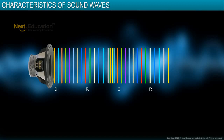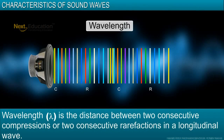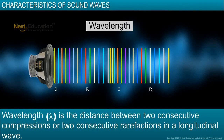The length of a single wave is called its wavelength. In other words, wavelength is the distance between two consecutive compressions or two consecutive rarefactions. It is denoted by the Greek letter lambda.